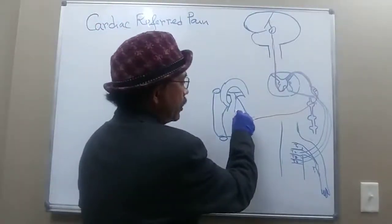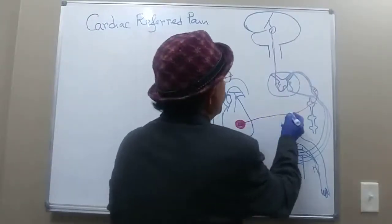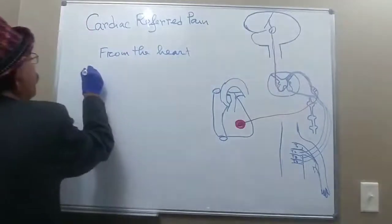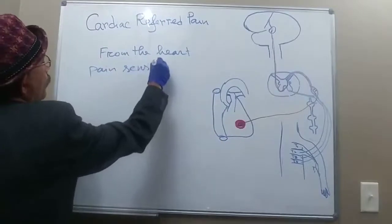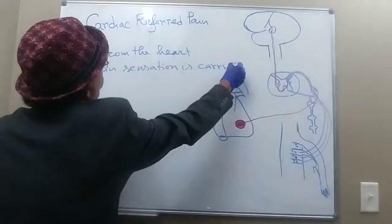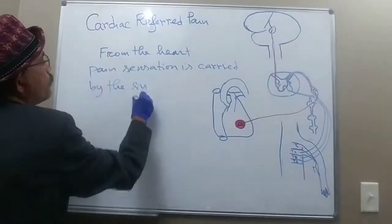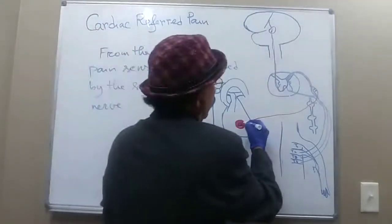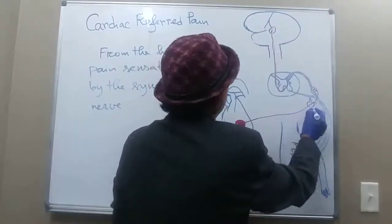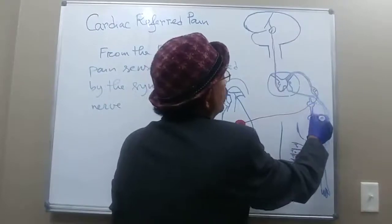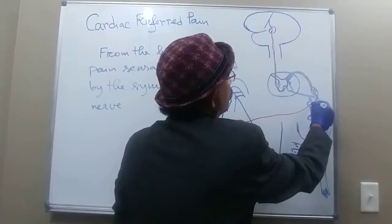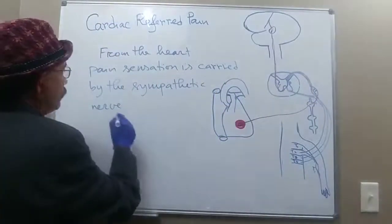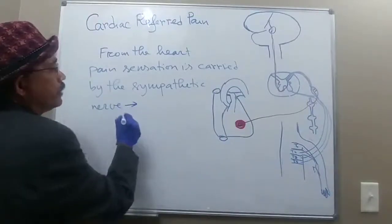So, looking at the left ventricle — some artery has been blocked here. The pain sensation is carried by the sympathetic nerve from the heart. The pain sensation travels through the sympathetic ganglion, then through the white rami communicantes, then to the posterior root, going to the dorsal grey horn of the spinal cord.